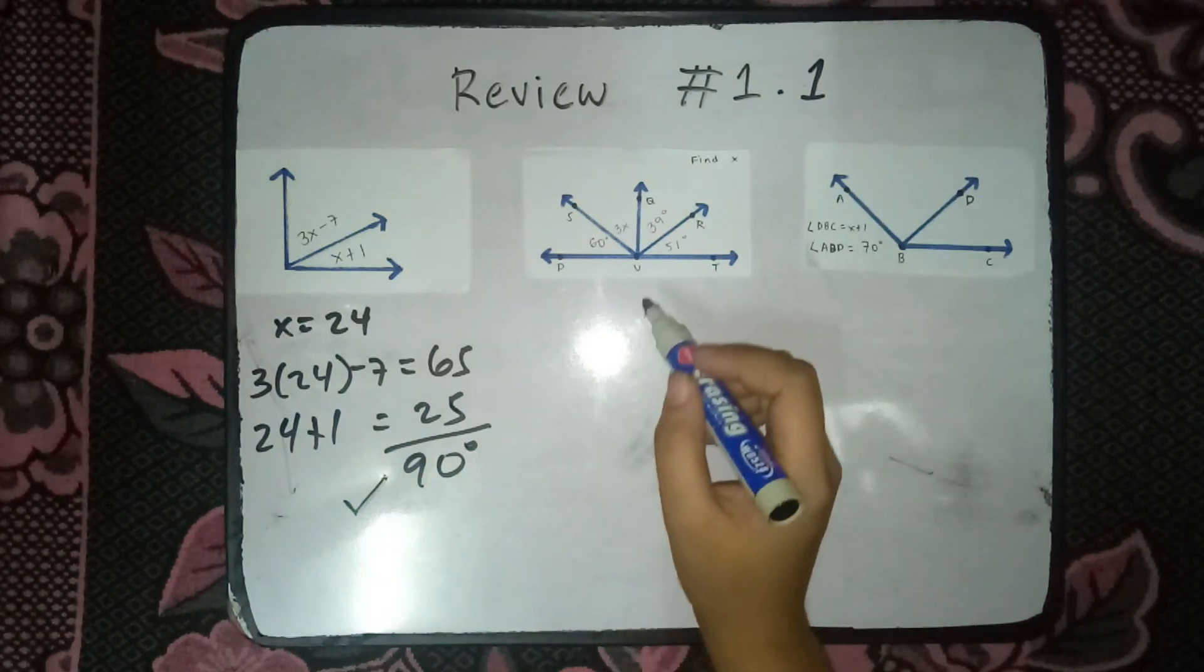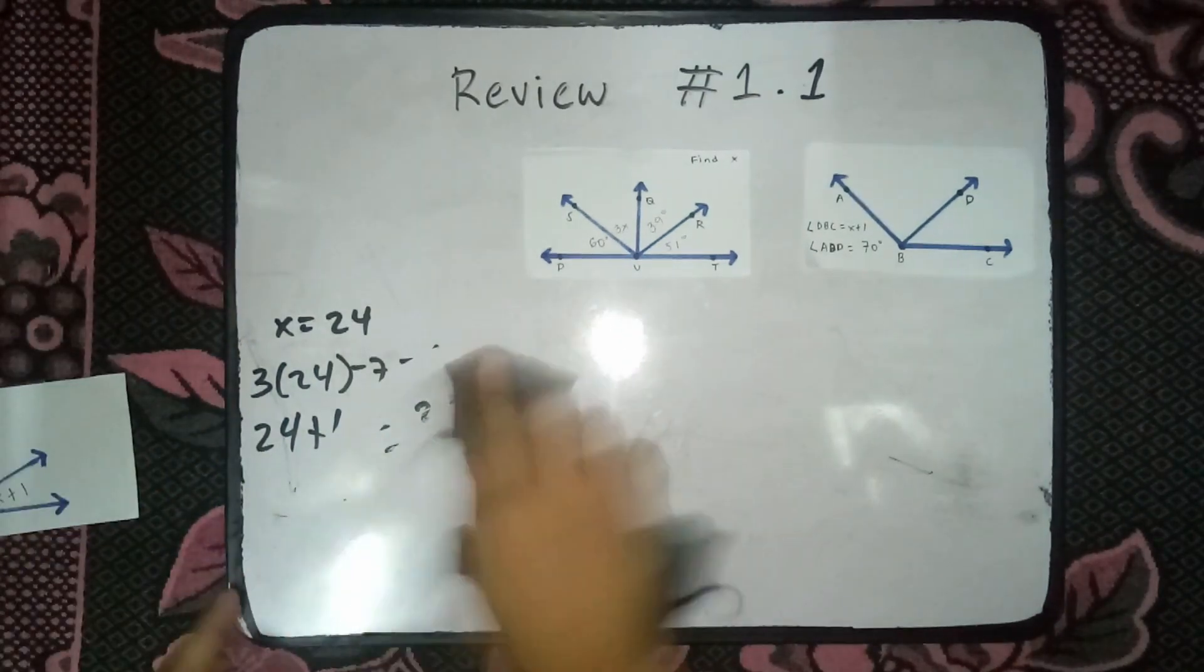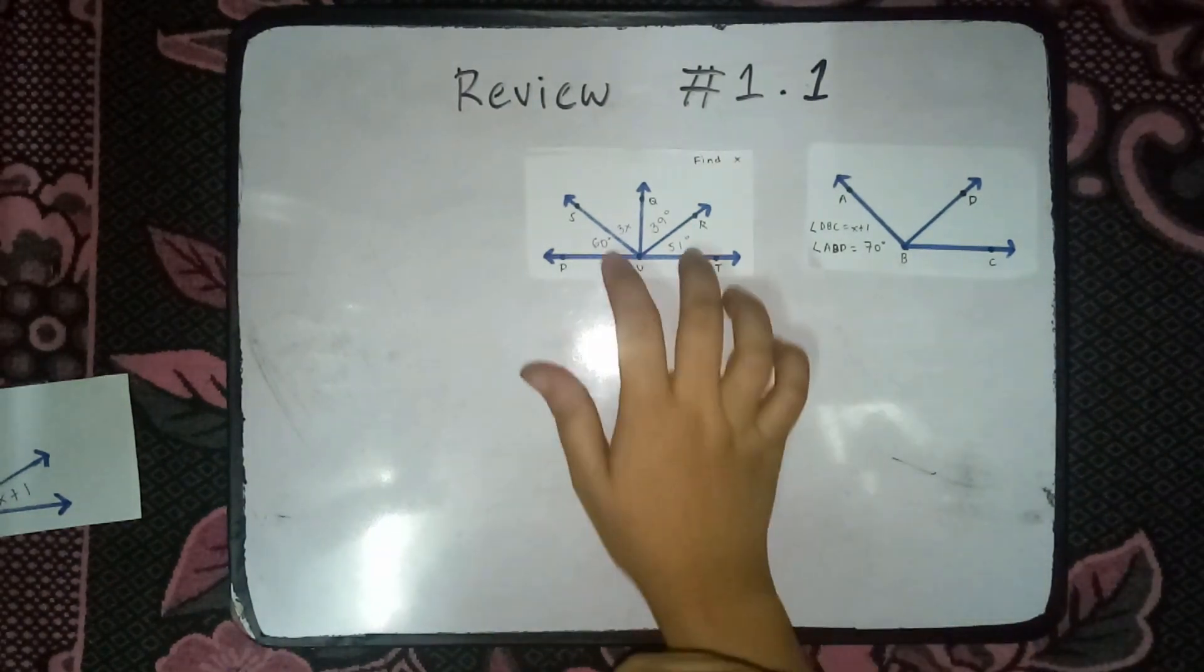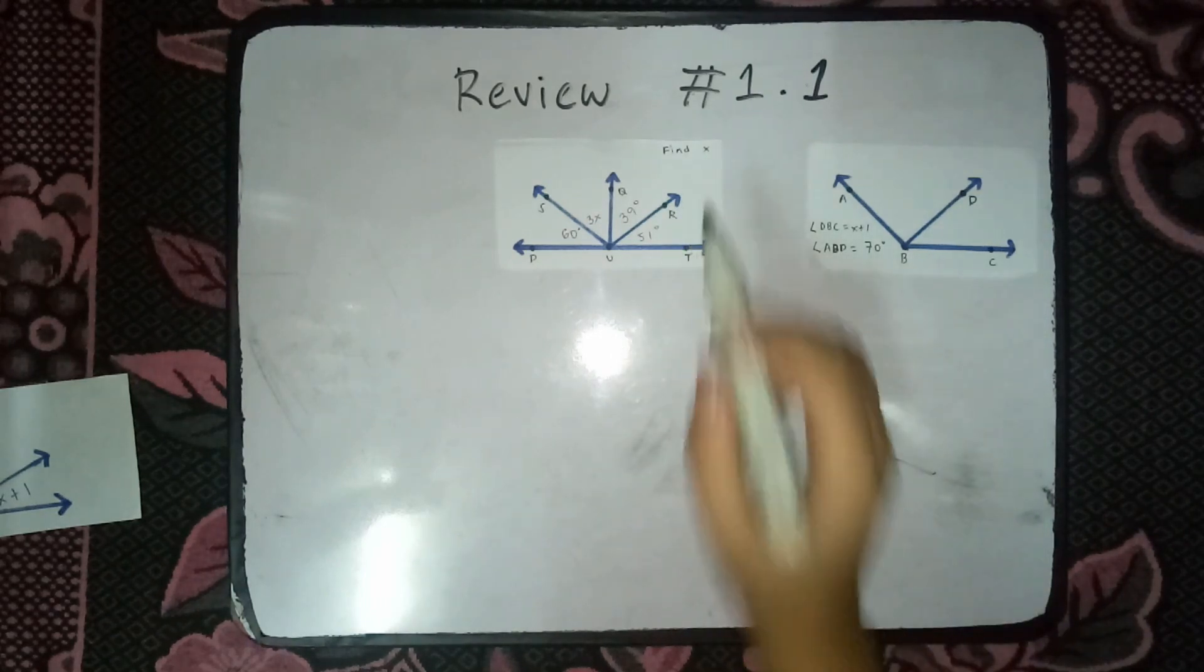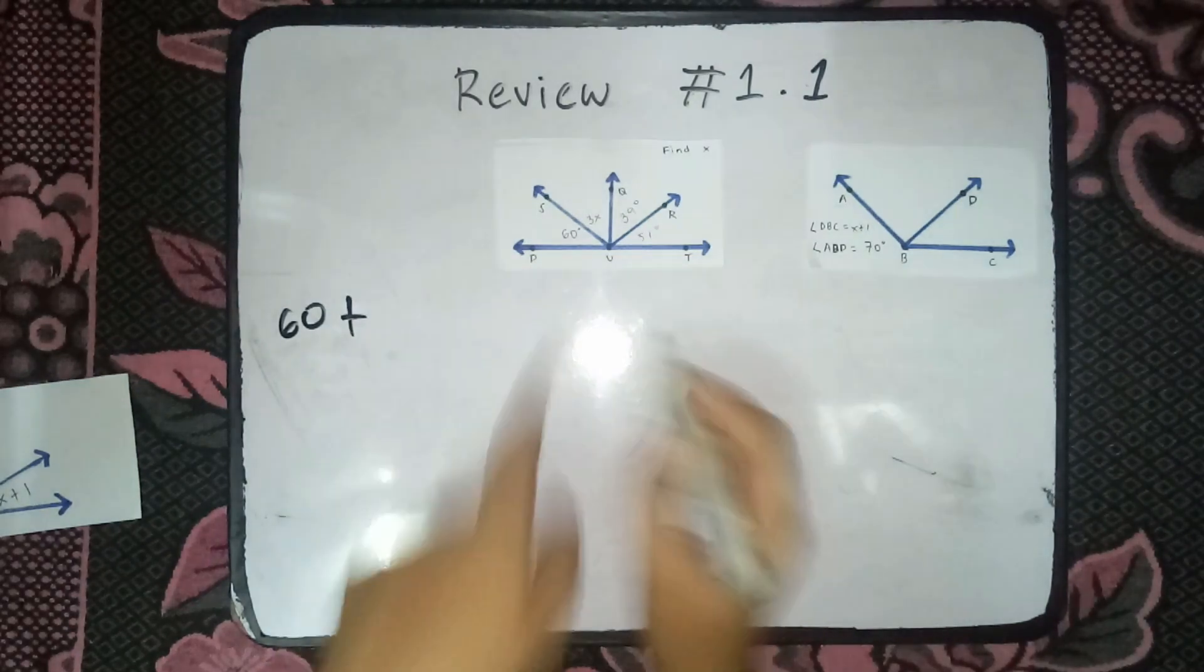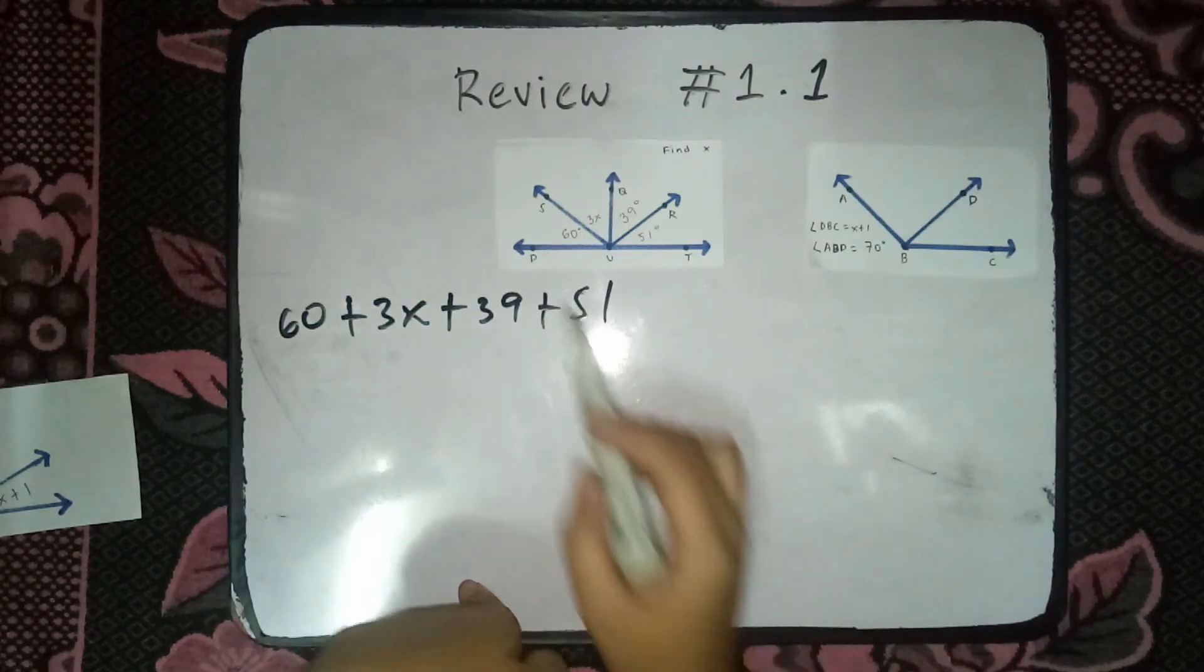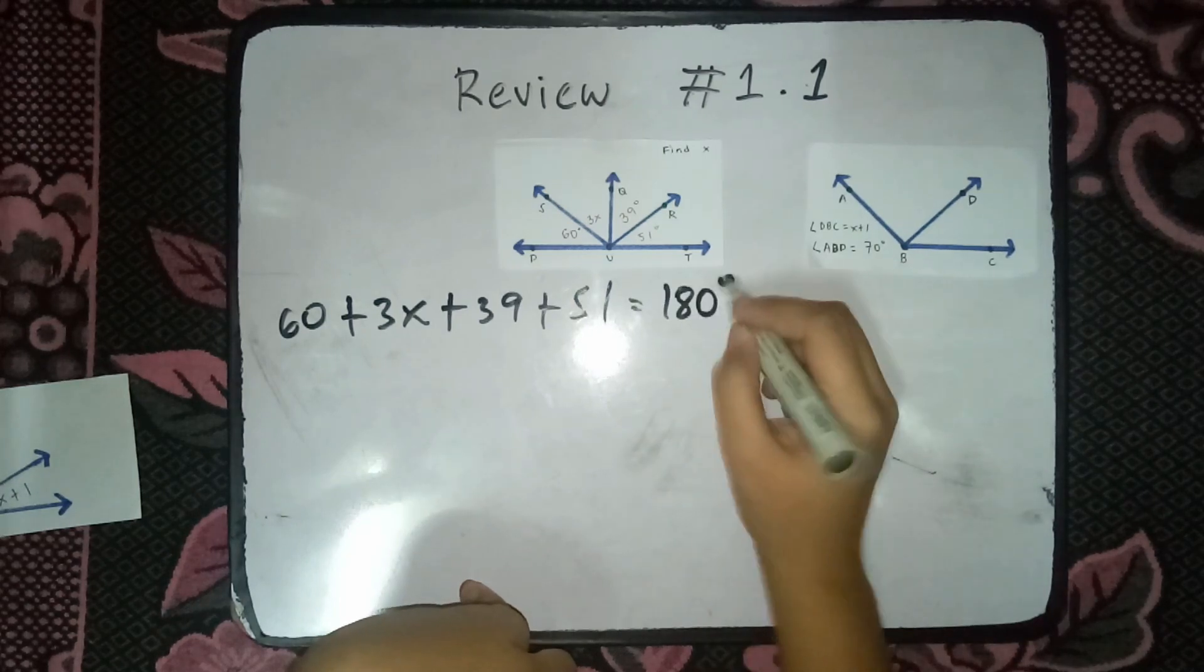Next, we have this one. We need to find the x. So, we have 60 plus 3x plus 39 plus 51. So, this is supplementary angle. This is equals to 180.